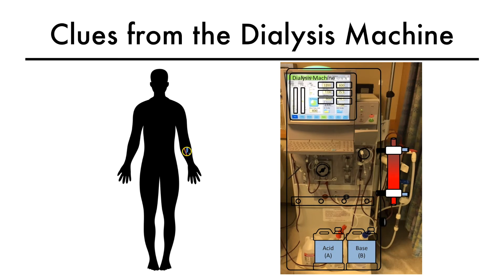Let's move on to part two of axis stenosis. We learned how to evaluate stenosis on physical examination in the last video. Besides a good physical exam, are there any other clinical clues that might indicate axis stenosis?